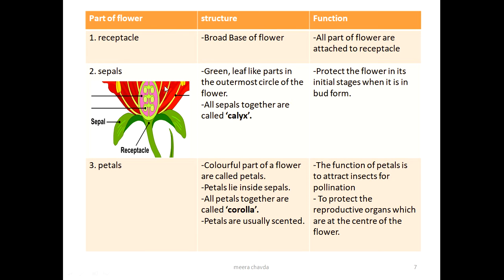Here is the parts of the flower in tabular form showing the structure and function of each part. The receptacle is a broad base of the flower and its function is that all parts of the flower — ovaries, stamen, pistils, and sepals — are attached to the receptacle.